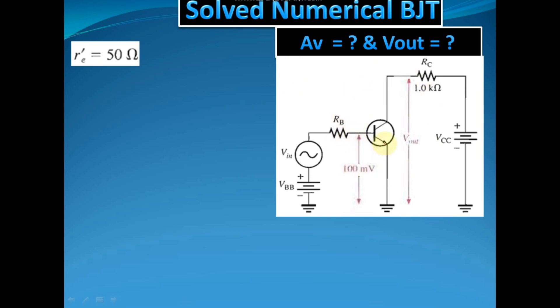You have been given this circuit and you have to find out the voltage gain of an amplifier, that is Av, and the output of the amplifier. Here you can see Vout at the circuit.